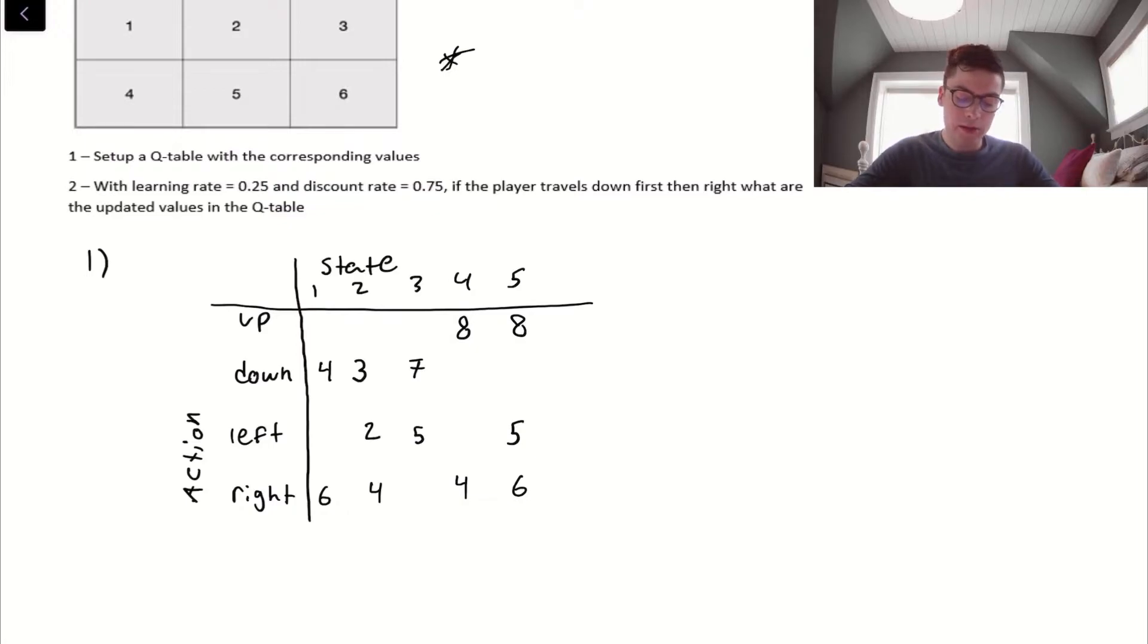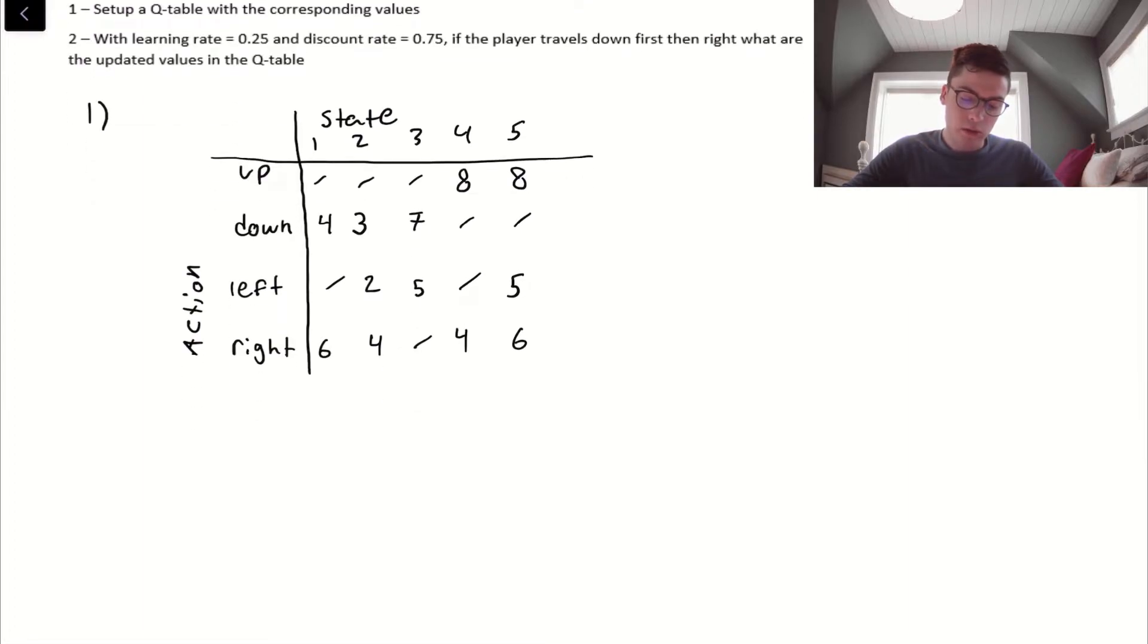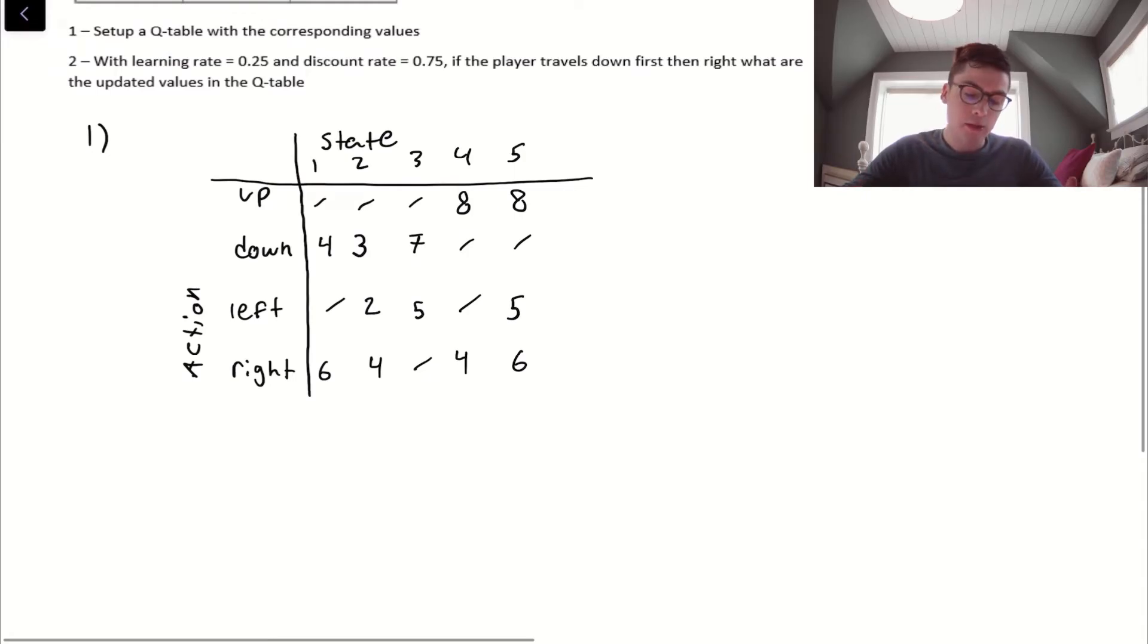Now, with all the values filled in, this is pretty much it. I'm just going to fill in the empty spaces with null values, just so it's easier to visualize and know that there's nothing in these spots. Yeah, that is the Q table.